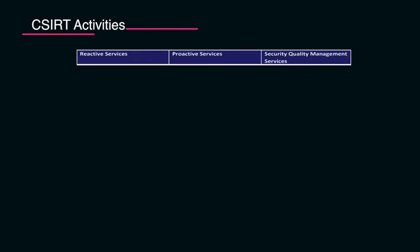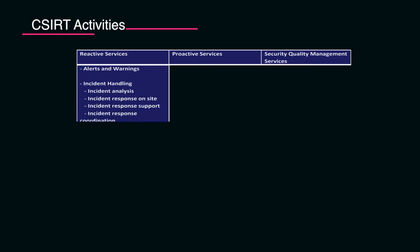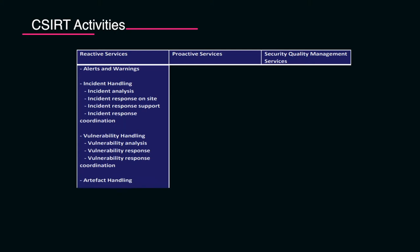According to Carnegie Mellon University, CSIRT activities fall into reactive services, proactive services, and security quality management services. Reactive services — post-incident — include issuing alerts and warnings, incident handling, incident analysis, incident response on-site, incident response support to the victim, incident response coordination with external and internal agencies, vulnerability handling and analysis, artifact handling, artifact analysis, and the required coordination.